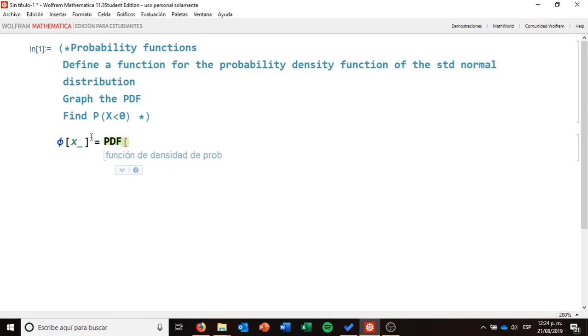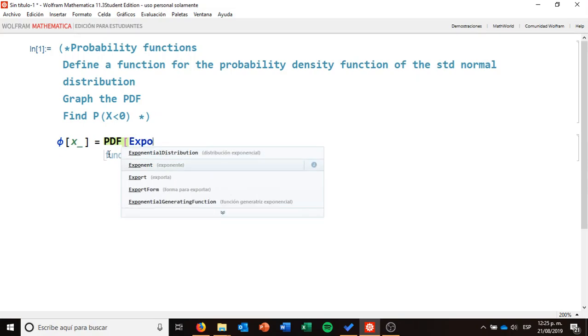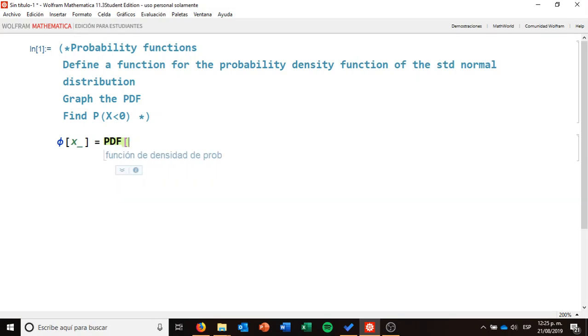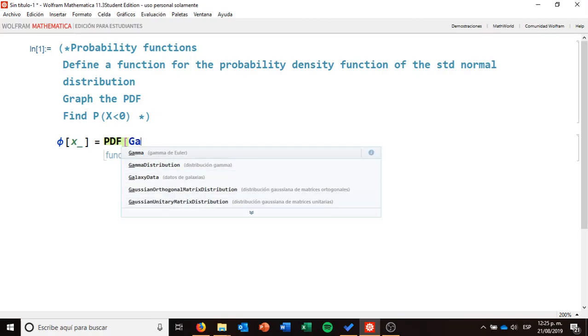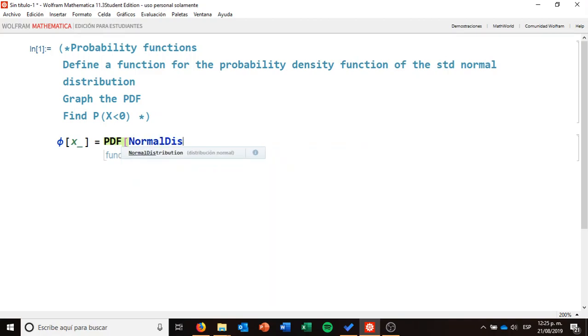And the first input is to define what kind of distribution you want to use. In this case, we're talking about the standard normal distribution. So I'm going to work with normal distribution, as you can see here, it says normal distribution as the first option. But you can use several others. For example, you can use the Poisson distribution, you can use the exponential distribution, you can use the gamma distribution, you have several different functions here in Mathematica that you can use. Right now, I want to use the normal distribution.